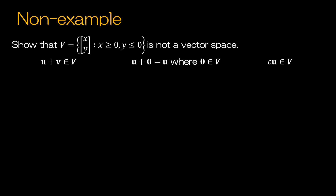Let's take a look at a non-example. Show that V, which contains all column vectors (X, Y) such that X is greater than or equal to zero and Y is less than or equal to zero, is not a vector space. When showing a non-example, you typically just need to find one axiom that fails. First, do we have the zero vector? Because of the 'or equal to,' yes — the vector (0, 0) is an element of V, so V is not empty.